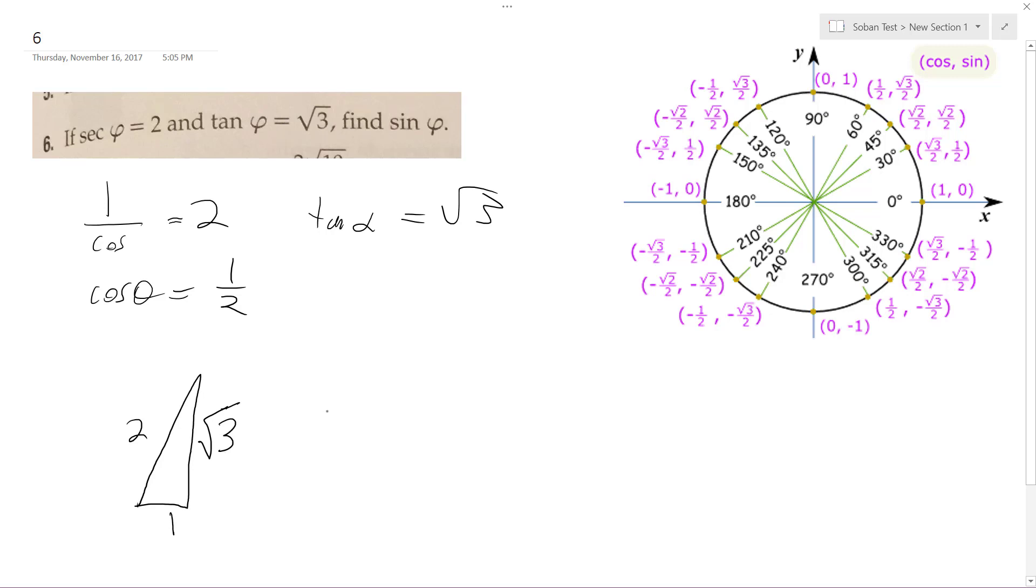Alright, so we want to find the sine, sine is opposite over hypotenuse, so the sine of alpha is equal to square root of three over two.